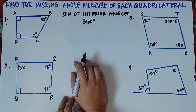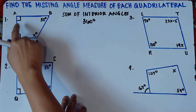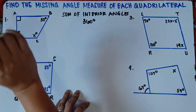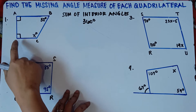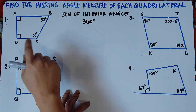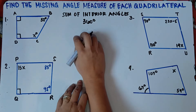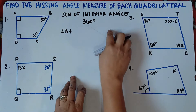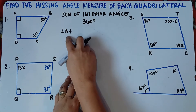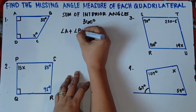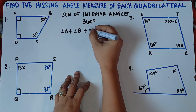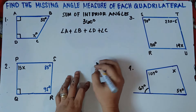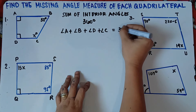Let's start. For number 1, we have given markings. We have a right angle for A, which means this is a 90 degrees angle. We have given angle A at 90 degrees, angle D, and angle B, but we don't have angle C. So let's find angle C. Angle A plus angle B plus angle D plus angle C should be equal to 360 degrees.